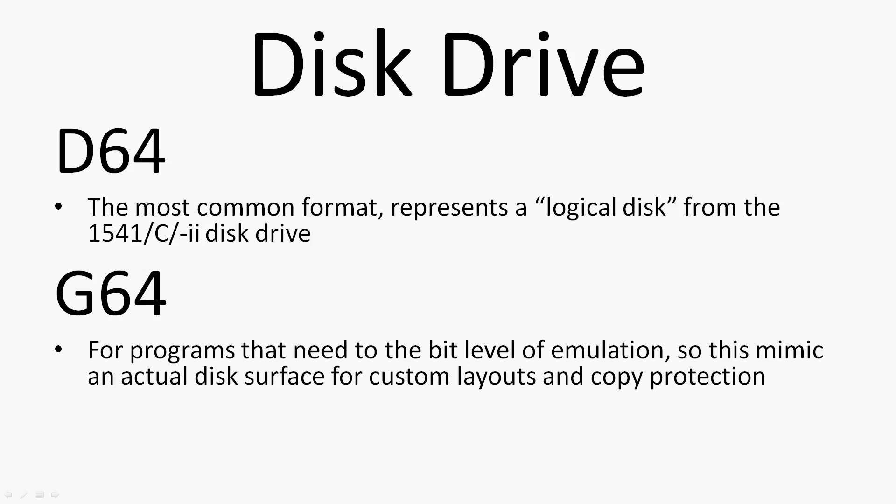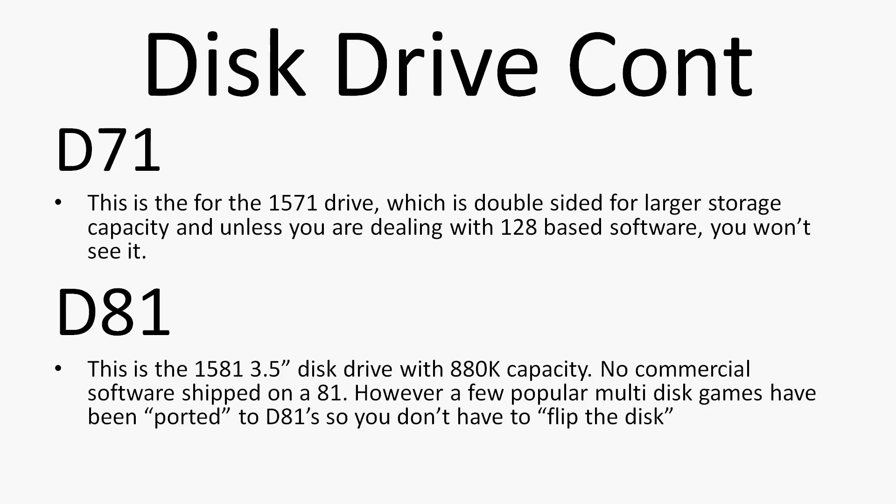For cases requiring full drive-level emulation, we need GCR-encoded images of every bit of the disk — these are G64 images. D71 is for the 1571 drive, which is double-sided for larger storage capacity, but unless you're dealing with obscure C128 stuff you won't see one. The D81 is for the 1581 3.5-inch disk drive. No commercial software shipped on D81 — OK, Metal Dust did — but you'll see this for compilations and D81 versions of games. The 880K capacity allows 5.5 equivalent 1541 disks to fit on one disk, allowing most games to be one disk and avoiding disk flipping — very handy on emulation devices where flipping disks is a pain.